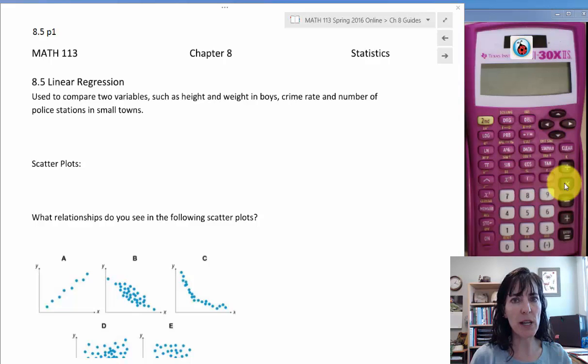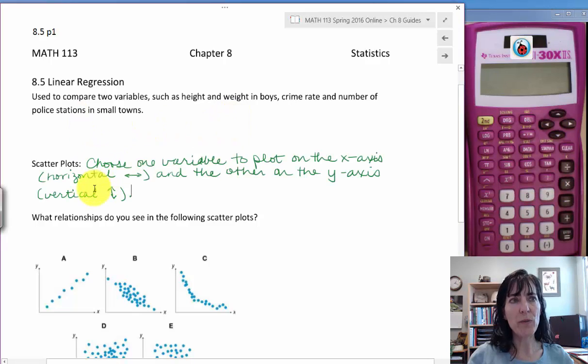A scatter plot is plotting one set of data along the x-axis and a different set along the y-axis. Choose one variable to plot on the x-axis, which is horizontal and goes side to side, and the other on the y-axis, which is vertical and goes up and down. You have to put a scale across the x-axis and on the y-axis, and then use pairs of data. For a particular boy, his weight would go out this direction and his height would take you up in this direction, and you put a dot where the two intersect. We'll see how to create a scatter plot from pairs of data in a few minutes.